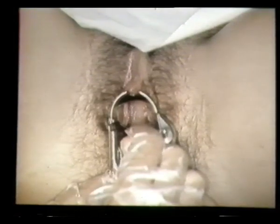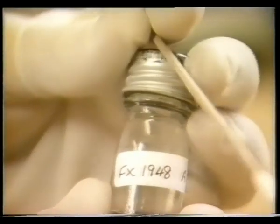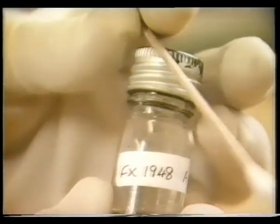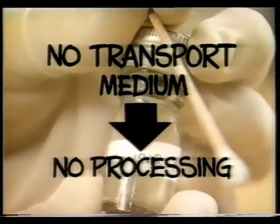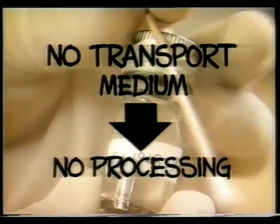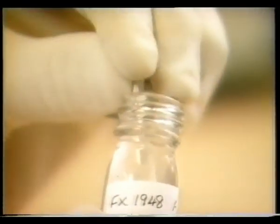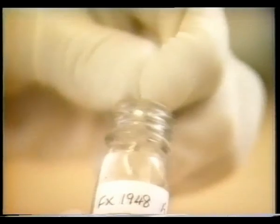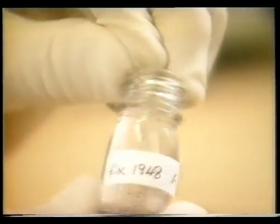Swabs used for urethral and cervical specimens should not be inhibitory to Neisseria gonorrhoeae. Charcoal or serum-impregnated cotton, Dacron or calcium alginate are appropriate. All swabs should be placed in an appropriate transport medium such as Stuart's or Amies, and should not be refrigerated and should be processed within 24 hours of collection.